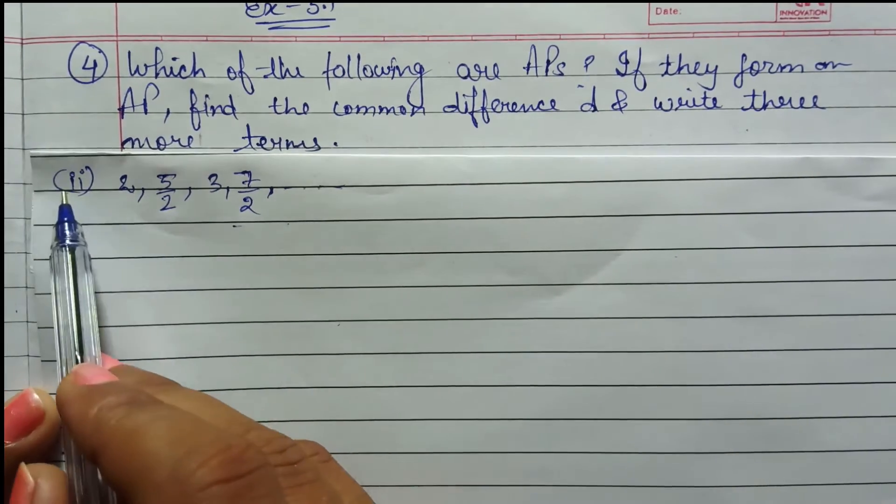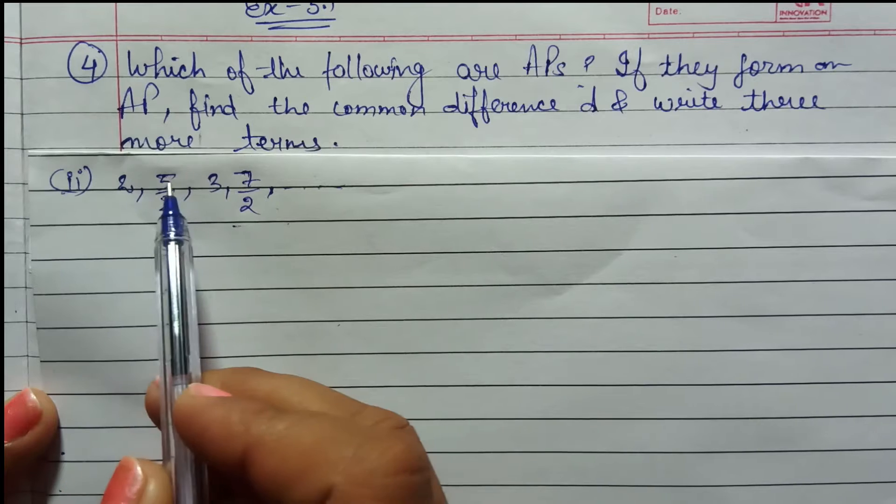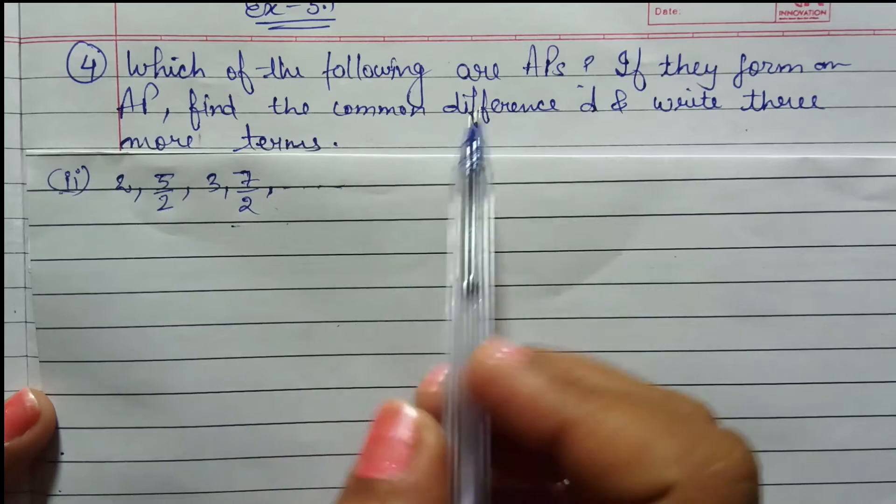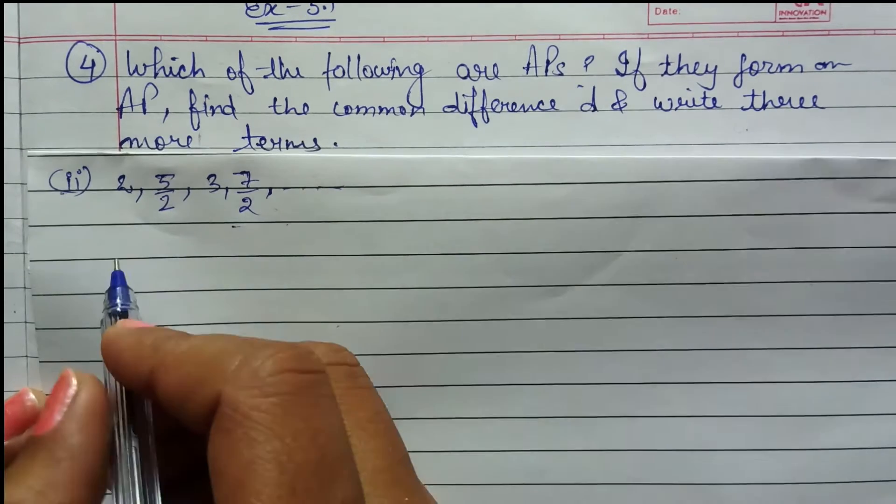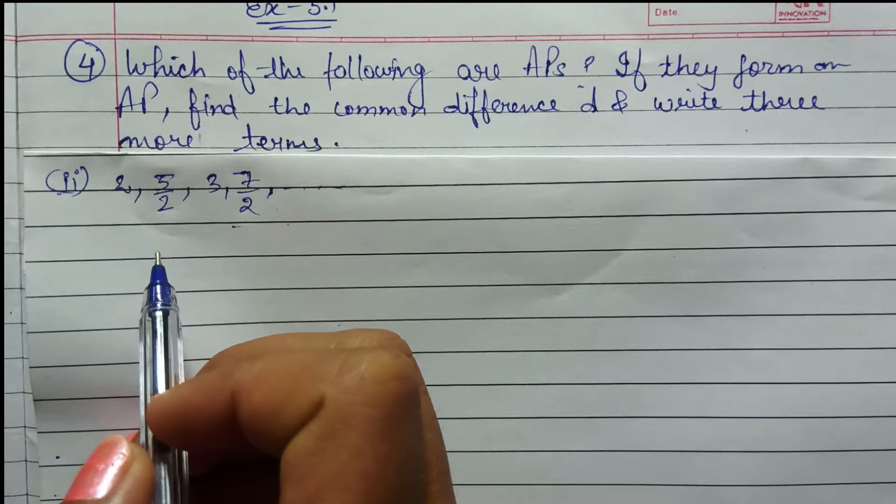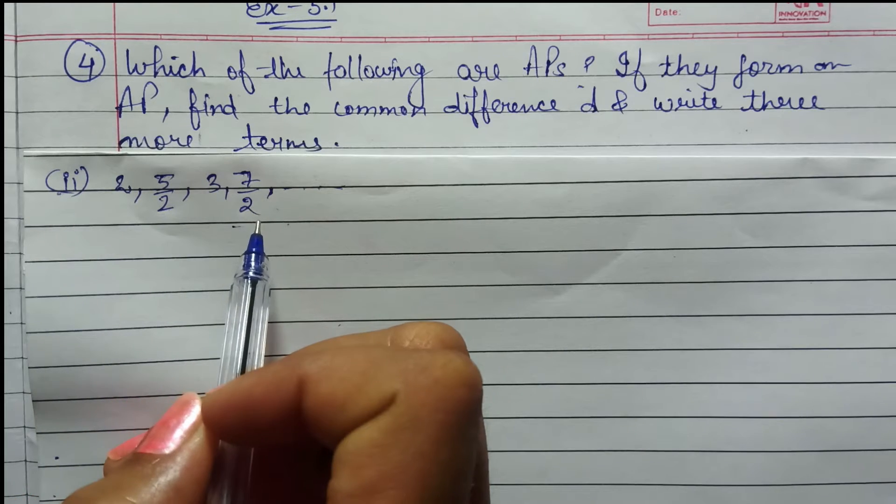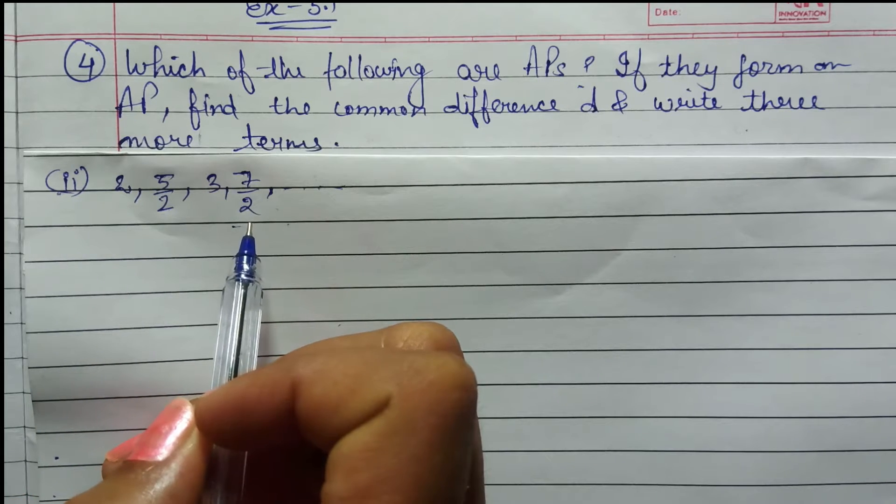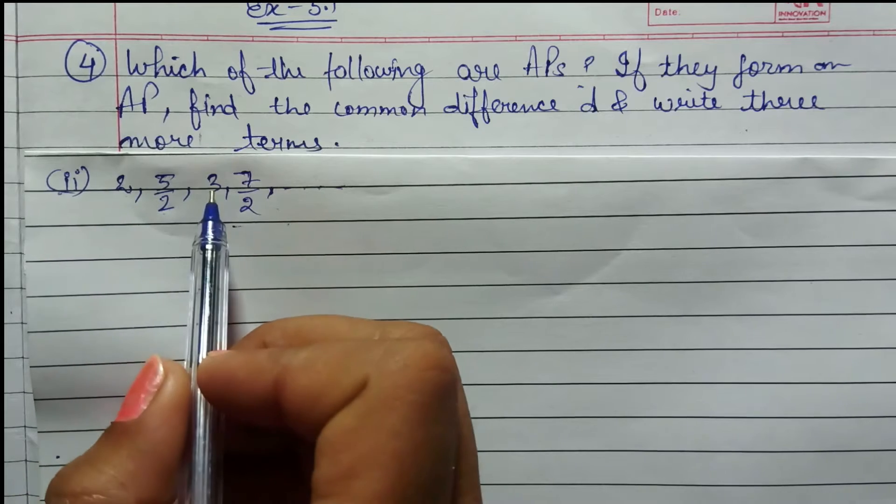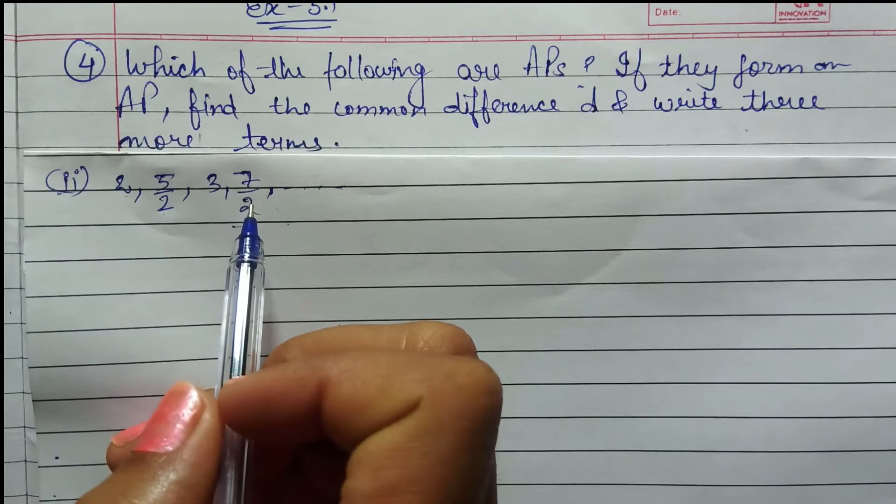See how, like in the second sequence, we have 2, 5 by 2, 3, 7 by 2. First of all, we will check whether it is AP or not. How do we check? What is AP? Look, if successively adjacent terms of difference is the same, then in that case, the sequence is AP. So what do we do? We will do the common difference of adjacent terms.